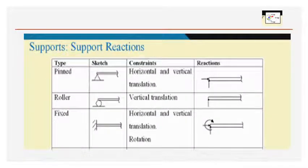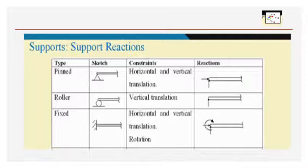Pinned or hinged support restricts movement both in horizontal and vertical directions, so it has two reactions. Roller support offers only resistance to vertical movement, so the reaction will be vertical. If the roller support is provided horizontally, then the reaction will be horizontal. Fixed support offers resistance to both linear and rotational motion — all three kinds of motion are restricted: horizontal, vertical, and rotation — hence three reactions. This is all you have to remember while drawing the free body diagram.